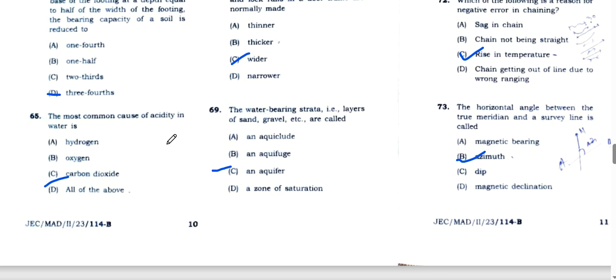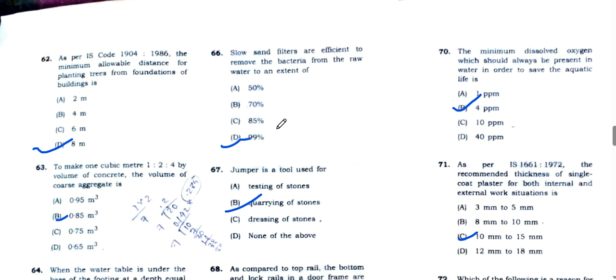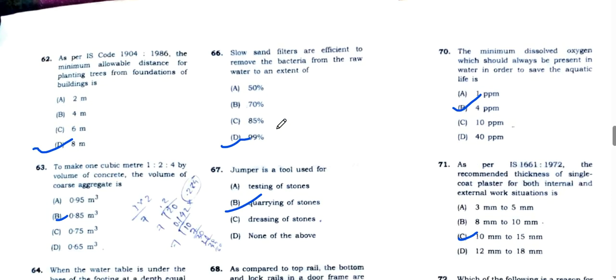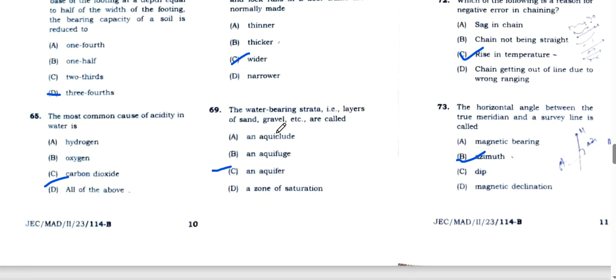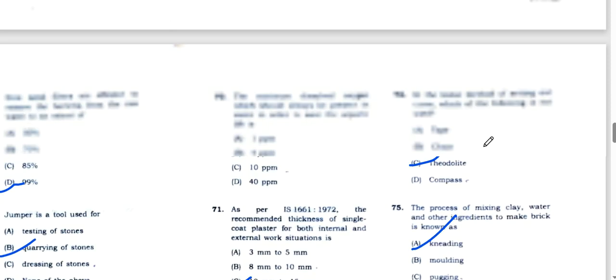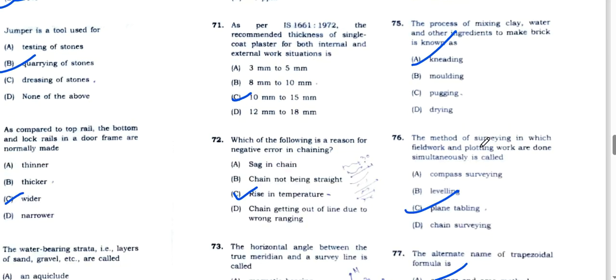When the water table is under the base of the footing at a depth equal to half of the width of the footing, the bearing capacity of the soil is reduced to 3/4, option D. Question 65, the most common cause of acidity in water is carbon dioxide. Slow sand filters are efficient to remove bacteria from raw water to an extent of 99%.